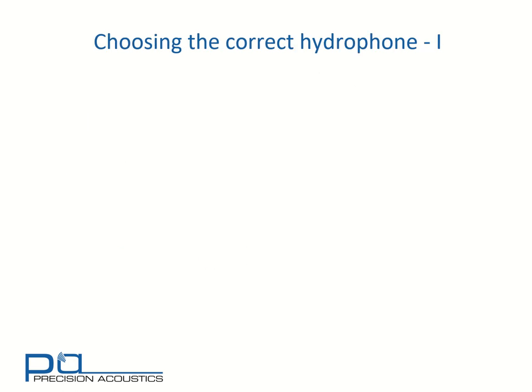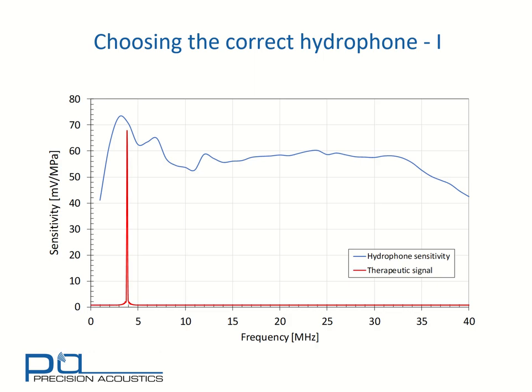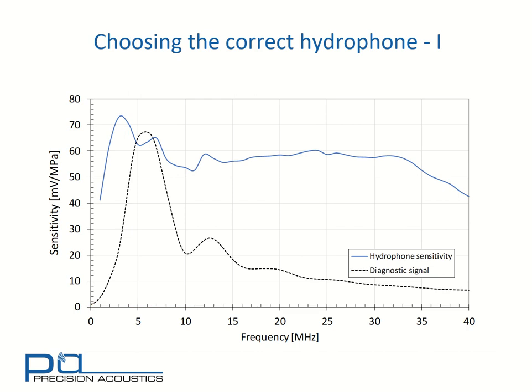It's important to make sure that we choose the correct hydrophone for these different applications. Considering the spectrum of the therapeutic signal with the needle hydrophone sensitivity — although we have some variation in the hydrophone's frequency response — within the very narrow band in which the significant energy for the therapeutic signal lies, there is actually very small variation. This would be an appropriate choice of hydrophone for this application. However, if we look at our diagnostic signal with its much broader spectrum, one can see that there's a lot of variation in sensitivity over that range, and the only way to correctly compensate for the frequency-dependent sensitivity variations would be to use deconvolution. We'll consider that in a further tutorial.